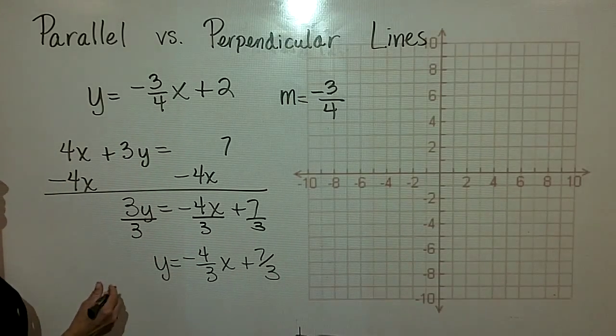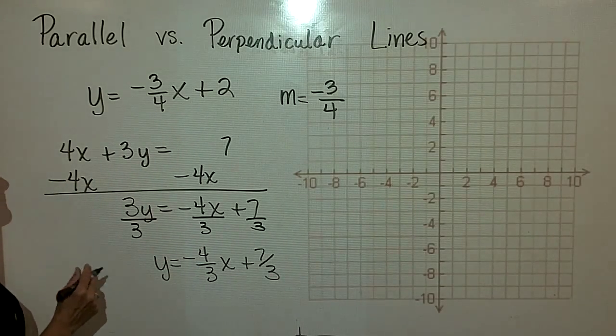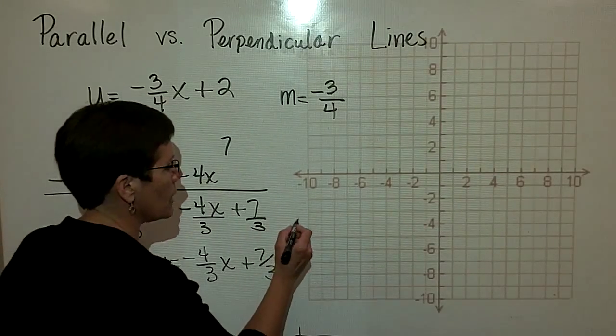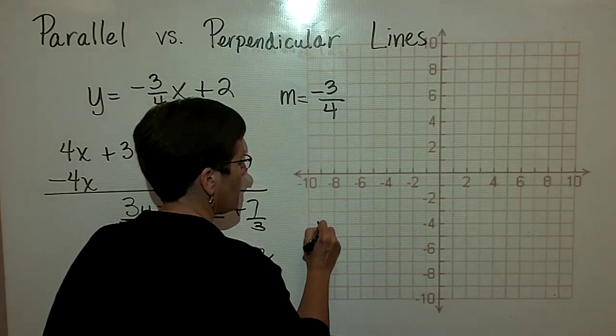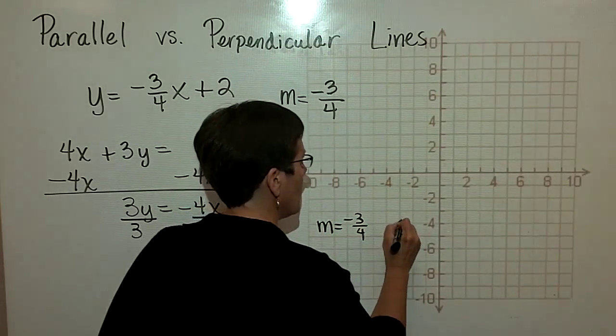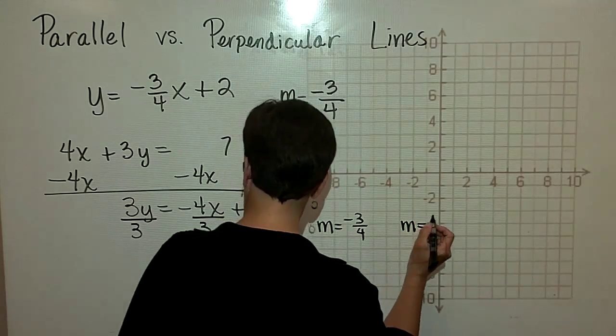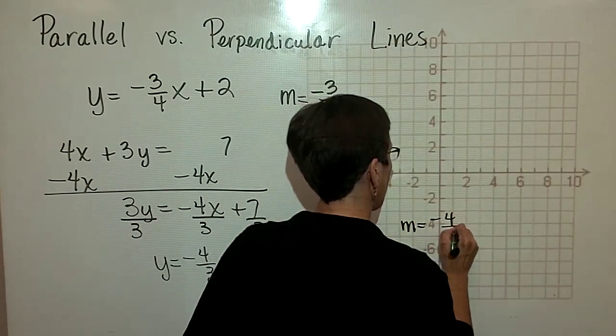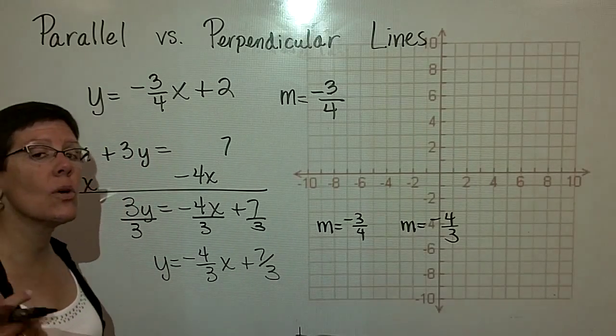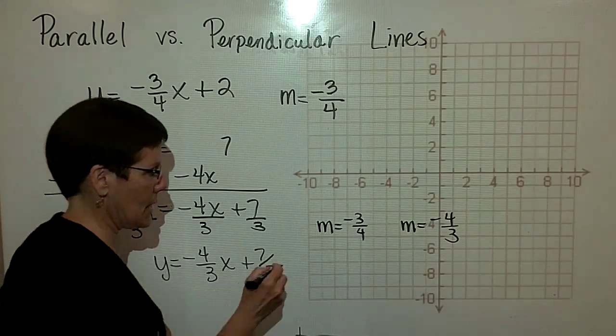And I see that the slope of the second equation is negative 4 thirds. The first one has a slope of negative 3 fourths. The second one has a slope of negative 4 thirds. While they are reciprocals, they are not opposite in sign. So these two are not perpendicular.